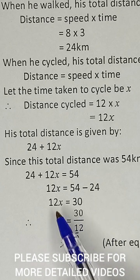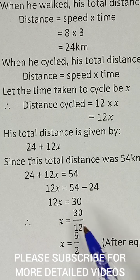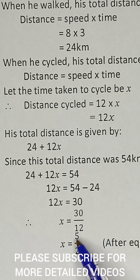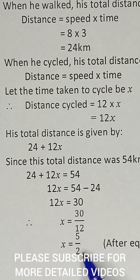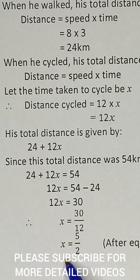We divide by 12, so x equals 30 over 12. In its lowest terms, 30 divided by 6 is 5 and 12 divided by 6 is 2, so x equals 5 over 2, which is the same as 2.5 hours. So the man cycled for two and a half hours.